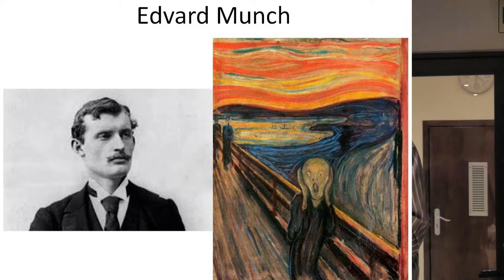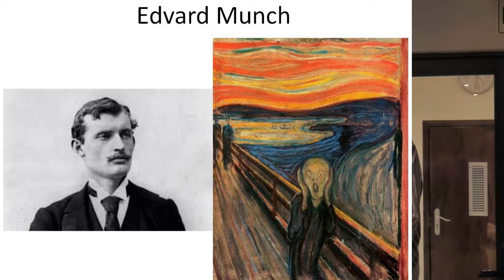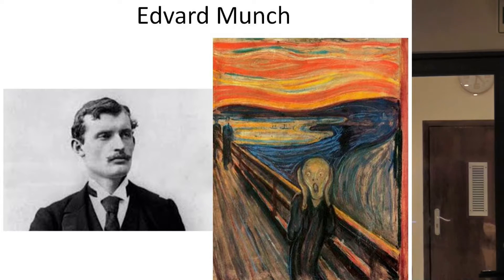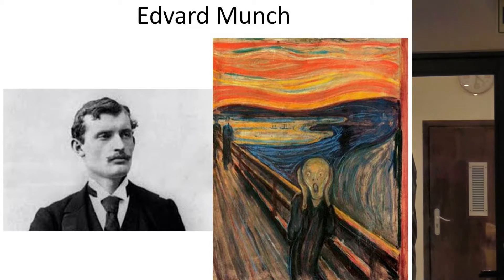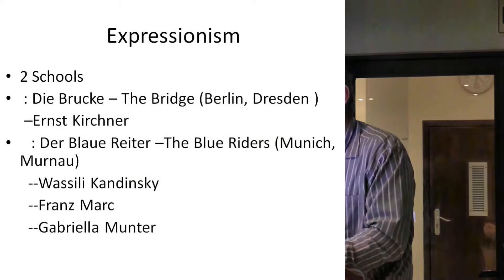Interestingly, although this was the German school, Edvard Munch — who was Norwegian — and The Scream is one of his works. He's regarded as one of the originators of Expressionism. Basically there were two schools of Expressionism in Germany: Die Brücke (the bridge), which was Berlin and Dresden, led by Ernst Kirchner; and Der Blaue Reiter (the blue riders), based in Munich and Murnau.